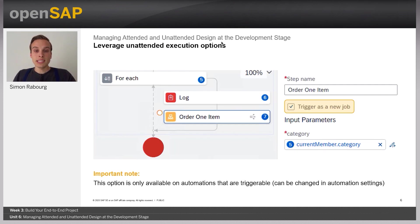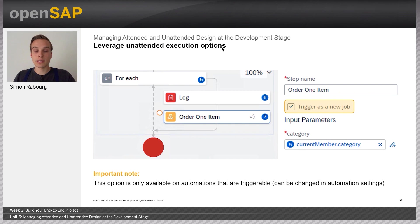Note that this agent would need to be defined on the environment you're working on. On this slide, you can find where this option is available. When you have selected the sub automation step, you can see the checkbox labeled "Trigger as a New Job." If you check this checkbox, the option will be activated.